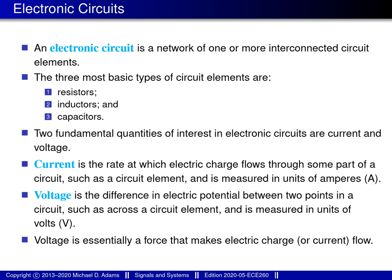When dealing with electronic circuits, two physical quantities of fundamental importance are voltage and current. Current is a measure of the rate at which electric charge flows through some part of a circuit, such as through a particular circuit element. Voltage is a difference in electric potential between two points in a circuit. Essentially voltage is the force that causes electric charge to flow, with current flowing from high electric potential to low electric potential, much like water flows from high elevation to low elevation.